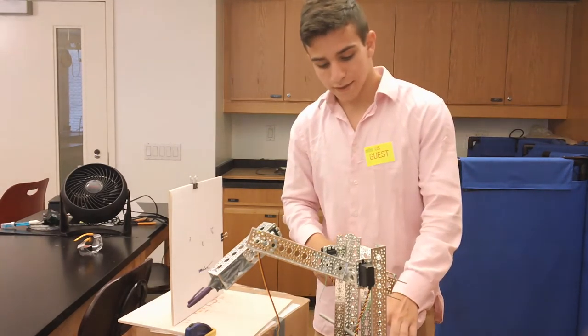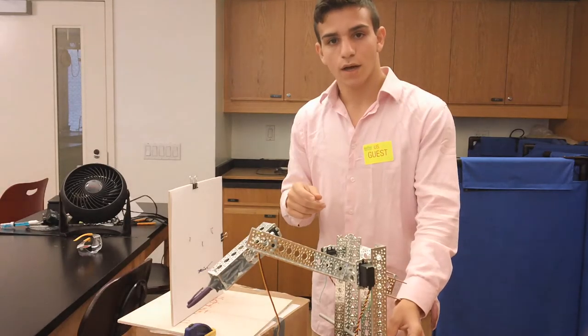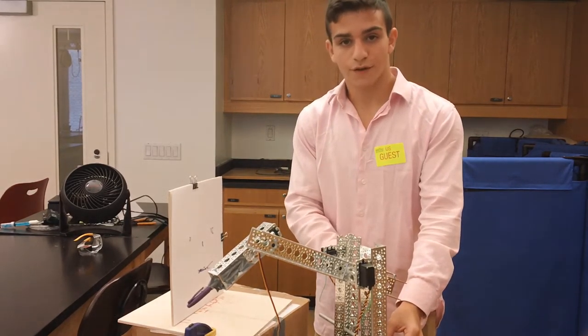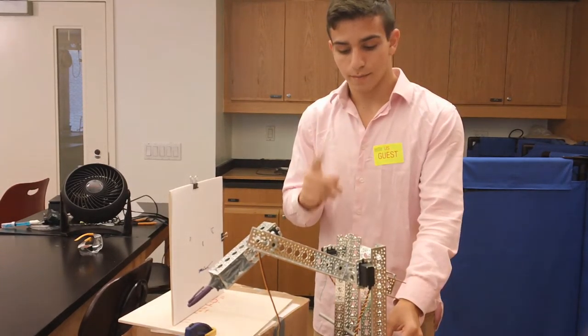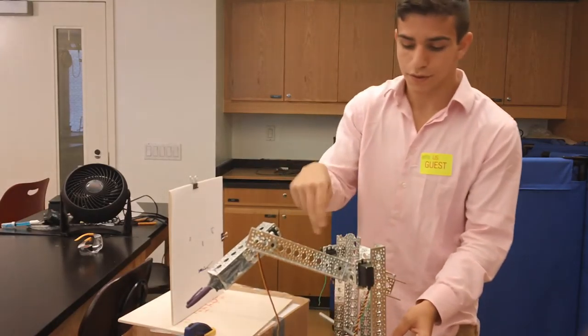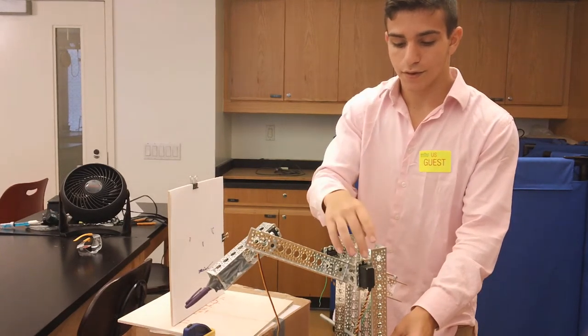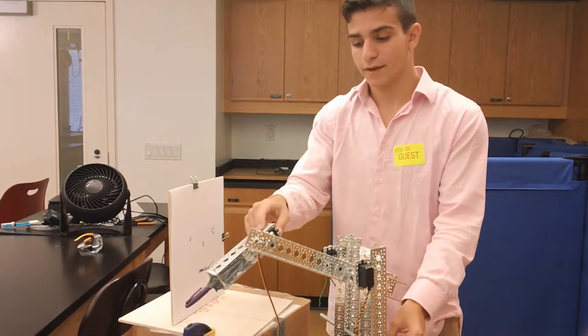So for example, the base, if I had a 1 on the first value, the base would find the first value in the first array, but in the shoulder servos, it would find it in the second and third array, and then for the elbow, it would find it in the fourth array.